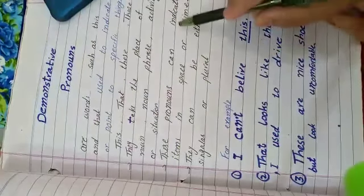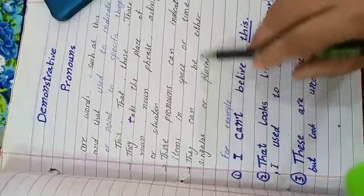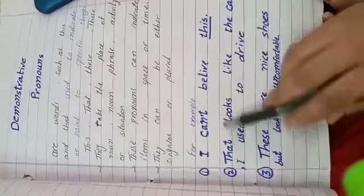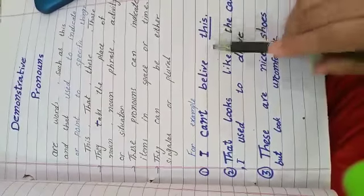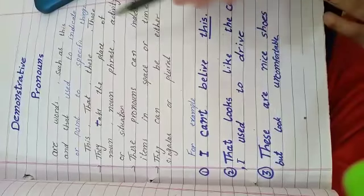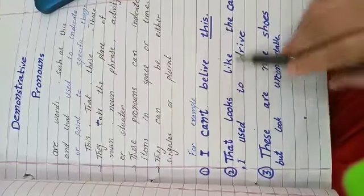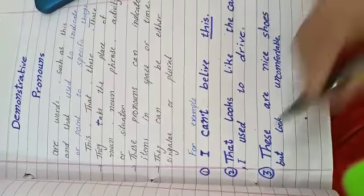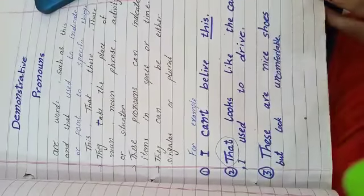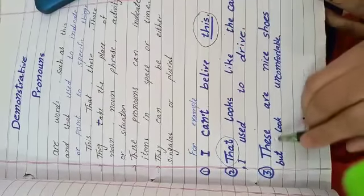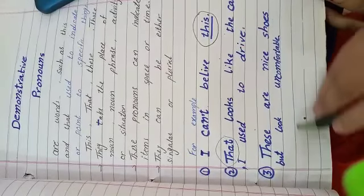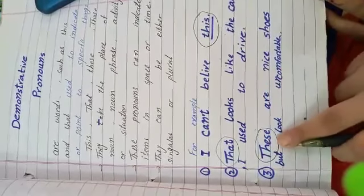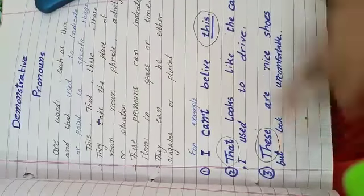They indicate space or time. They can be either singular or plural. For example: I can't believe this. So this, the word this, is a demonstrative pronoun in this sentence. That looks like the car I used to drive. Here the word that is a demonstrative pronoun. These are nice shoes but look uncomfortable. So these, the word these, is included in demonstrative pronouns.